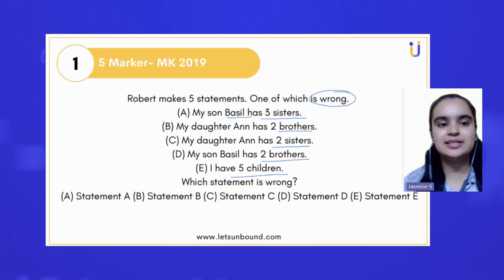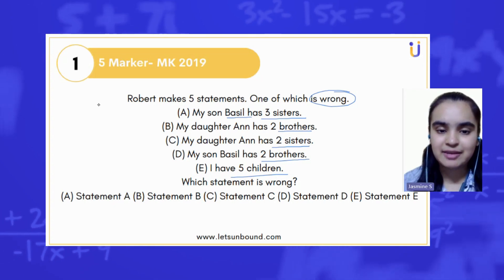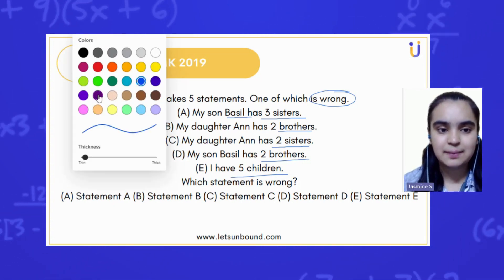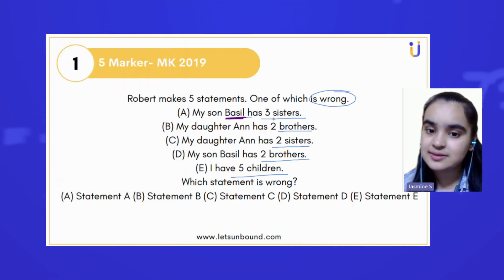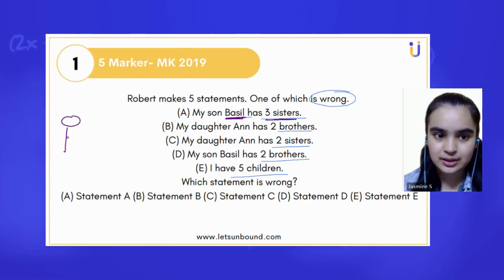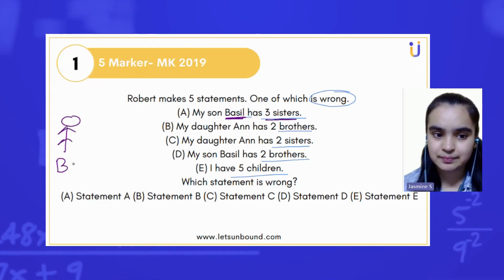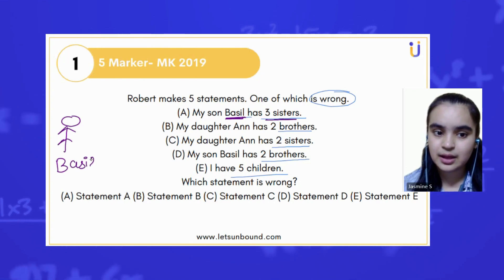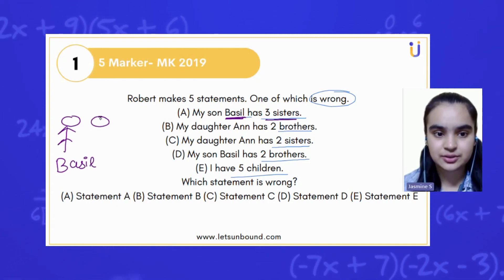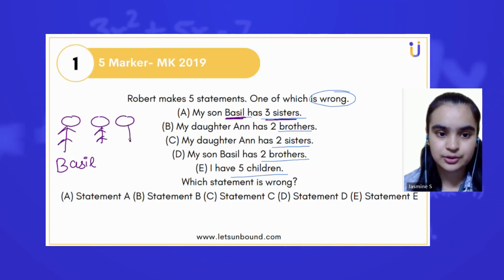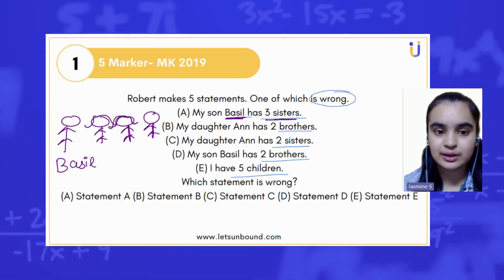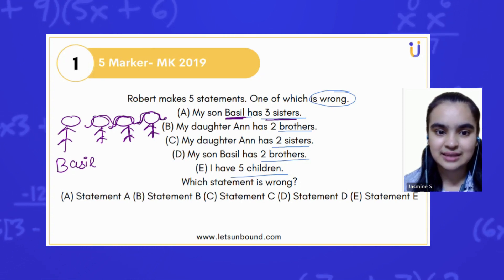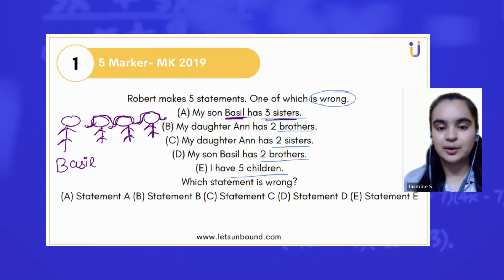Let's imagine and go step by step. In the very first statement, he mentioned that my son Basil has three sisters. So let's assume this person is Basil, and he is having three sisters — one, two, three. And to make them look like sisters, let's create some here.